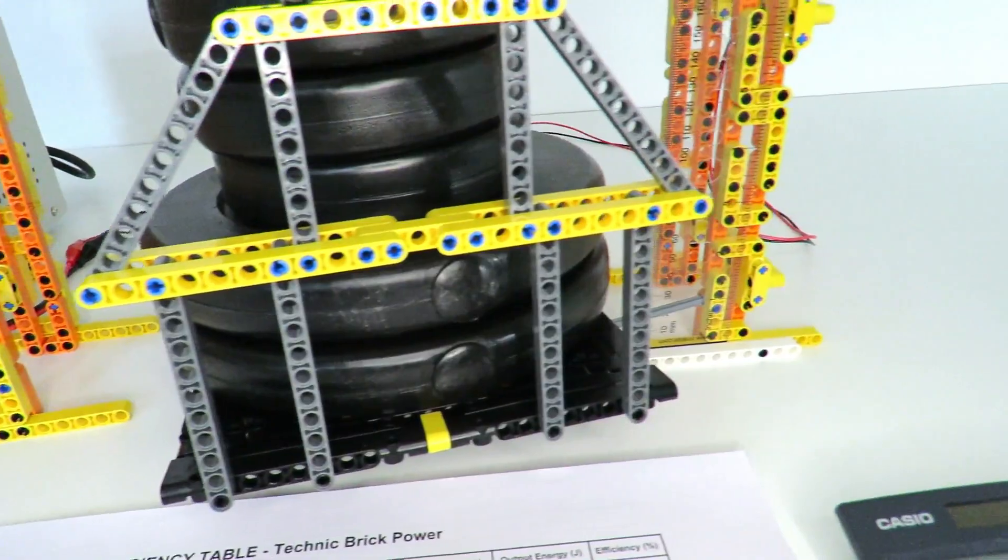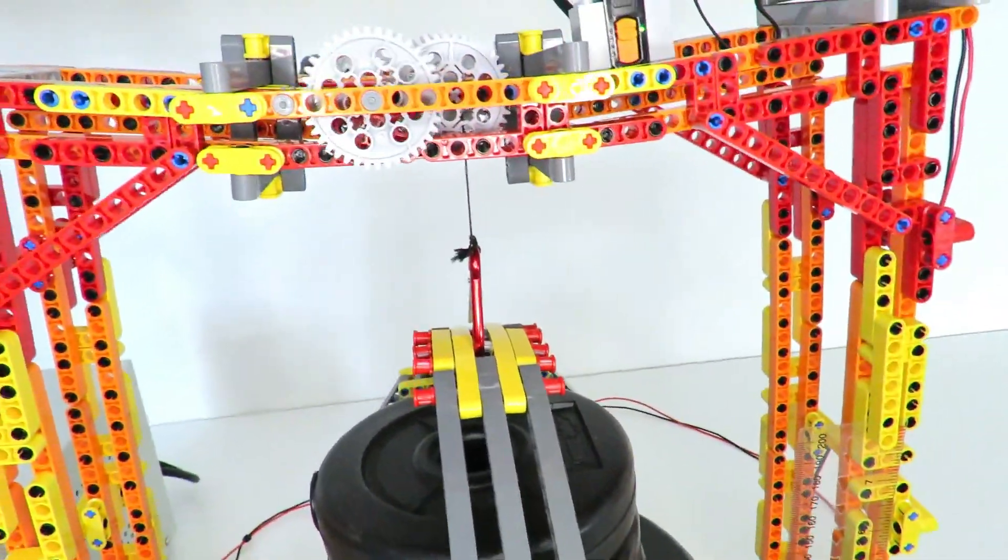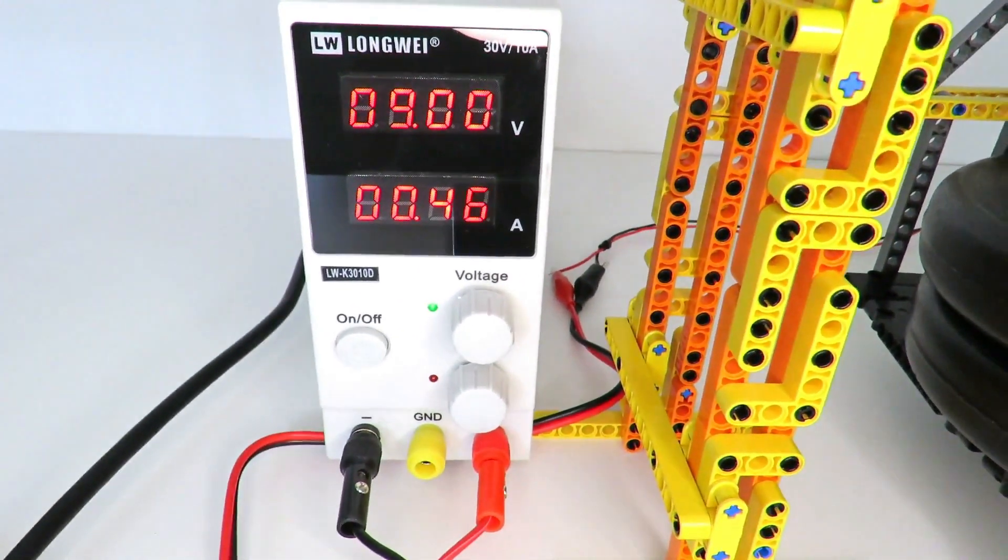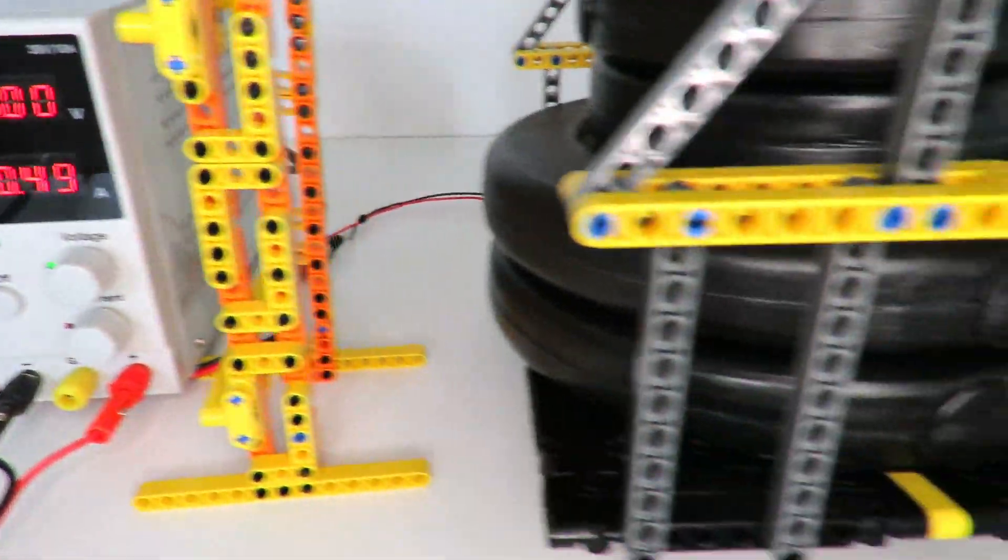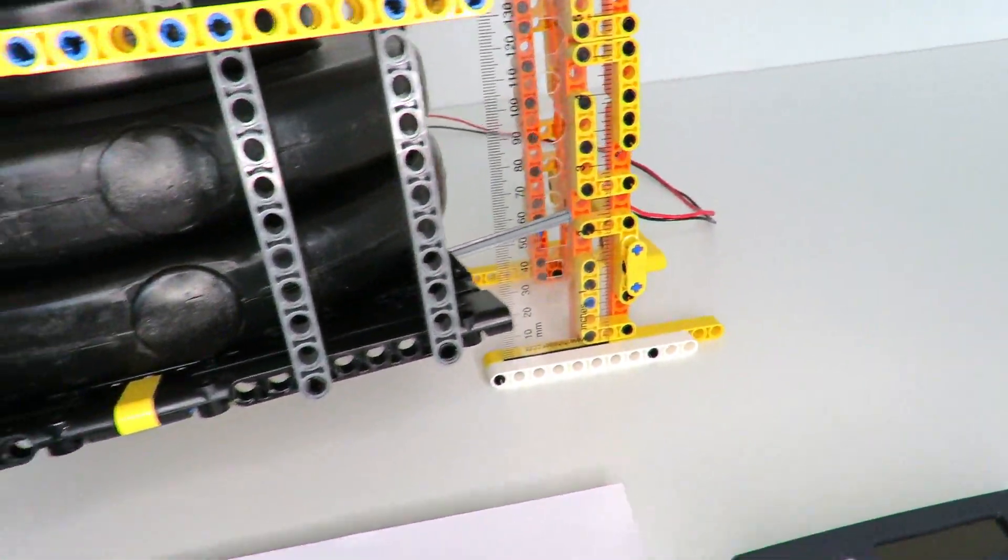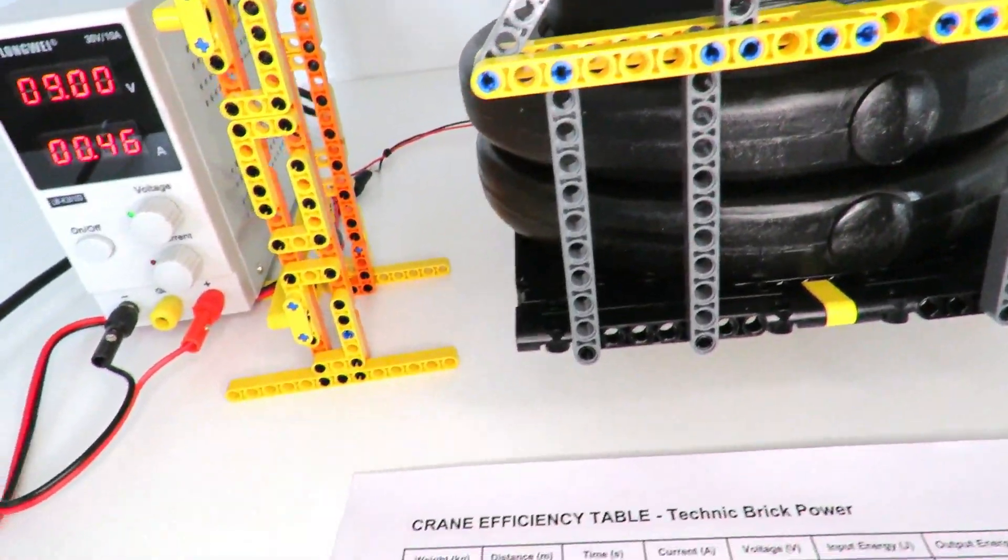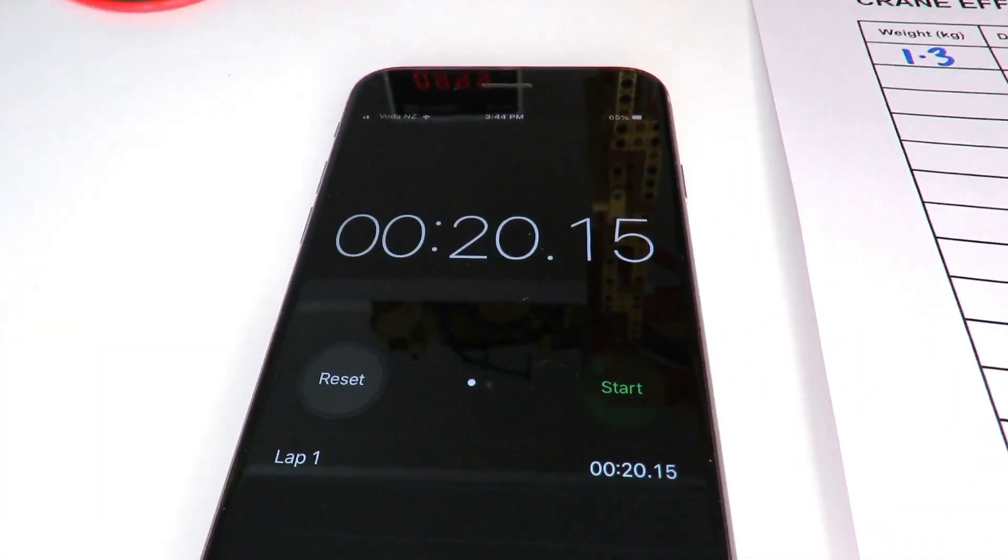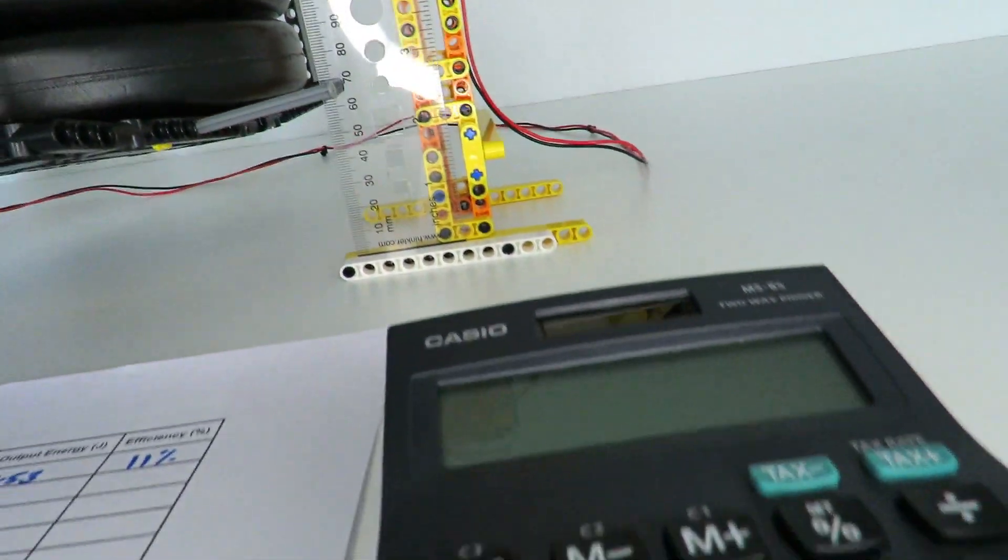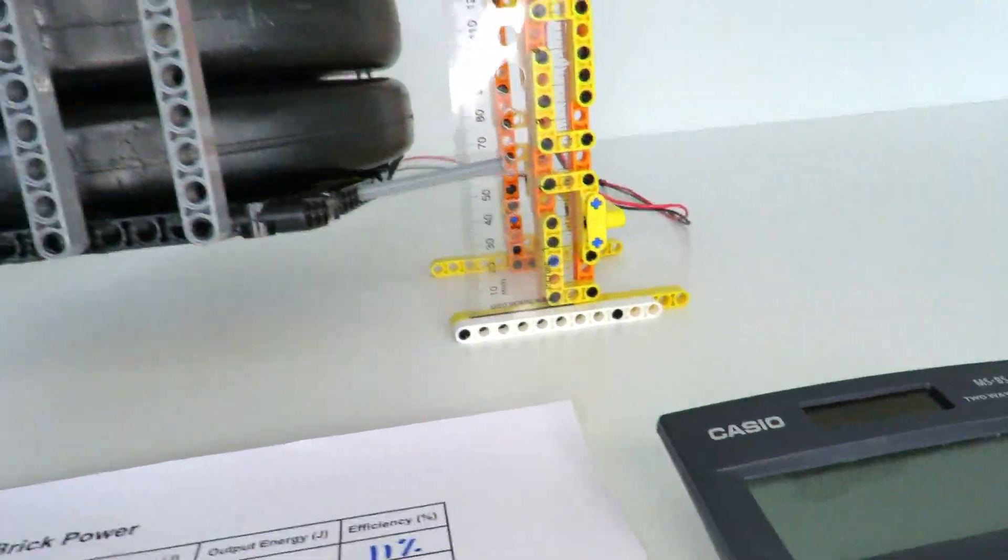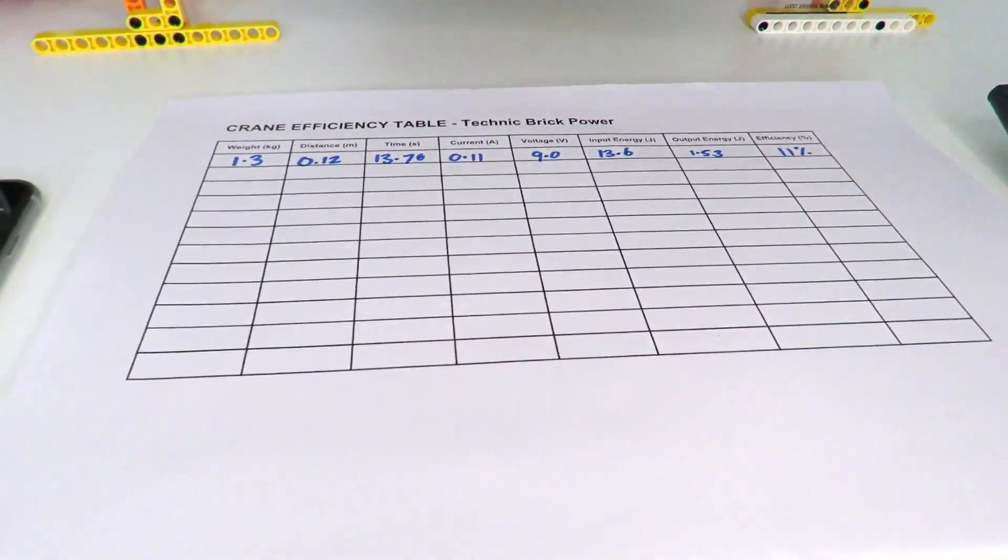Okay, and off we go. You can hear it's straining quite a bit more. The current's gone up dramatically from 0.11 of an amp to 0.47, and it's taking much longer. But we'll stop it here. 20 seconds and just a distance of about 5 or 6 centimeters and the current of 0.44. So let's work out those numbers.